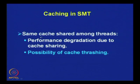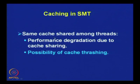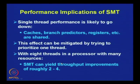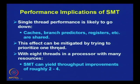Regarding caching: the same cache is shared among all threads, and performance degradation due to cache contention occurs. This leads to the possibility of cache thrashing — where data transfer between cache and main memory takes place constantly without doing real work — because the same cache is being shared by multiple threads. Single thread performance is likely to go down because of shared caches, branch predictors, and register files. This effect can be mitigated by prioritizing one thread.